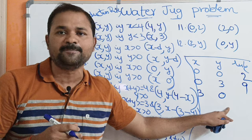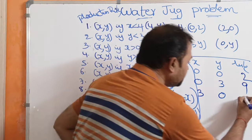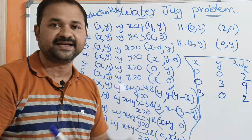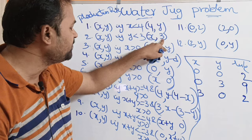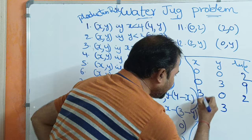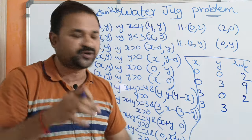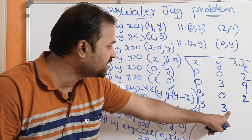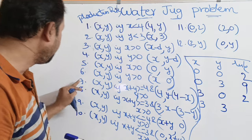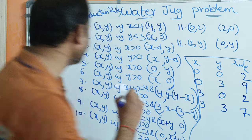Again, we apply the second rule to completely fill the 3-liter jug: y is 0, which is less than 3 — condition true. The new state is (3, 3). Next, we pour water from the 3-liter jug into the 4-liter jug until the 4-liter jug is full, so we apply the seventh rule.